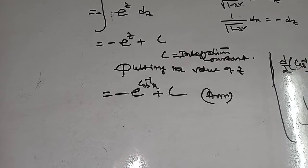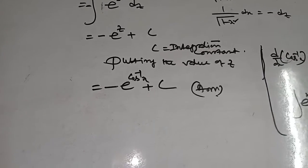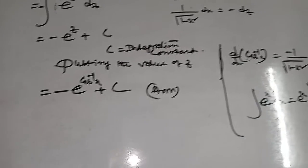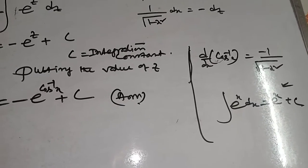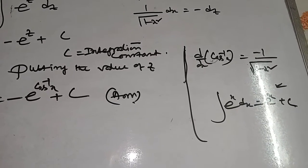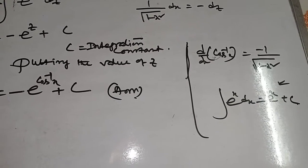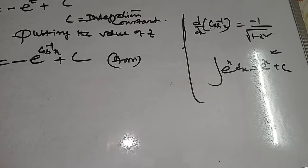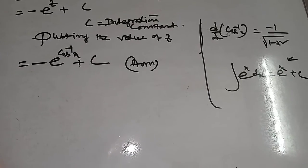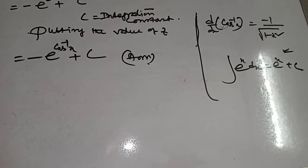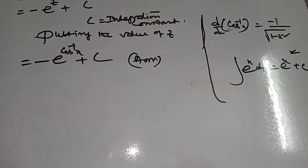You must remember: dx upon root over 1 minus x square means minus 1 by root over 1 minus x square. And integration of e to the power z means e to the power z plus c.